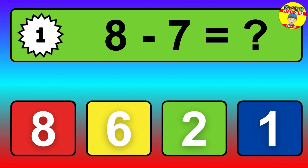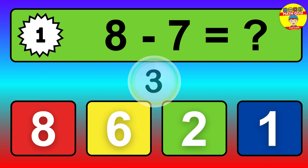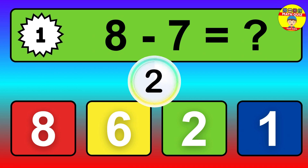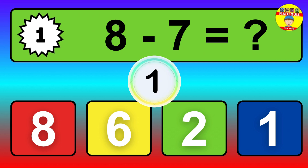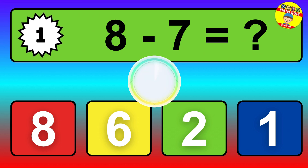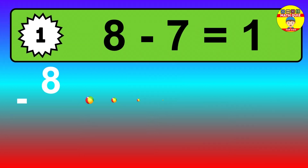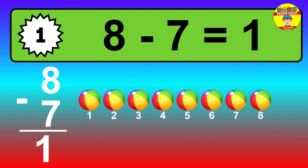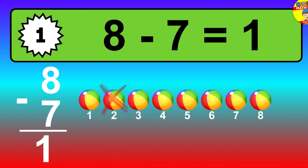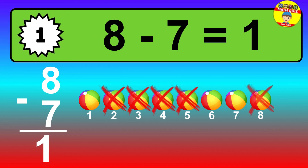Question 1. 8 minus 7 equals what? So the answer is 8 minus 7 is 1. Let's count it. 1.